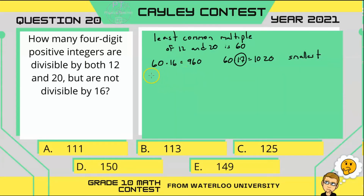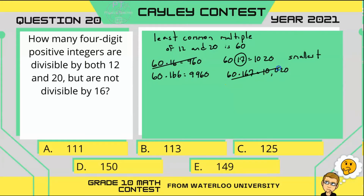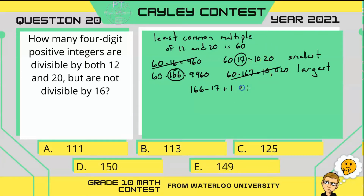Now we're going to find our upper bound. If you do 60 times 166, you get 9960 — that's a good guess. Notice it's very similar to 166. If you go one further and do 60 times 167, you get 10,020, which goes over. So 9960 is our largest four-digit multiple. Taking 166 minus 17 plus 1, because we want to include that very first multiple, we get 150.